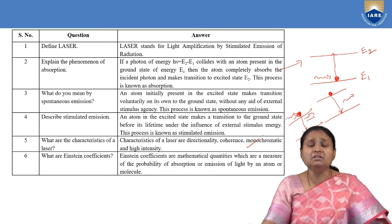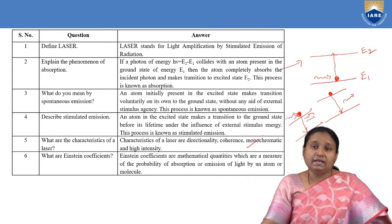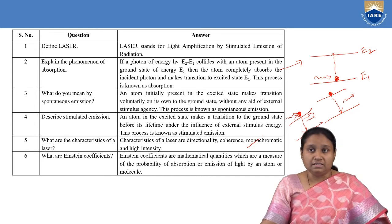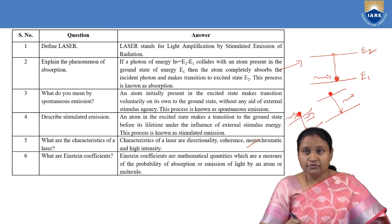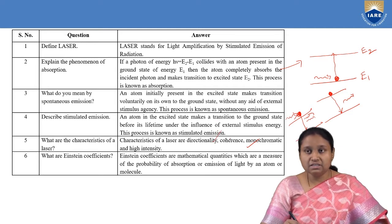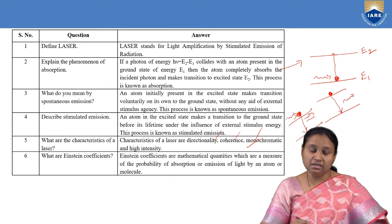Coming to the fifth definition: what are the characteristics of a laser? There are four characteristics: directionality, coherence, monochromaticity, and high intensity.